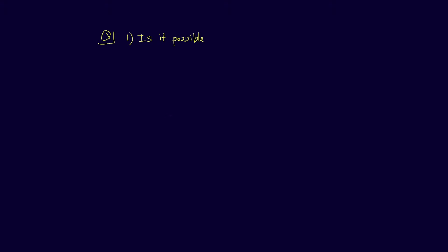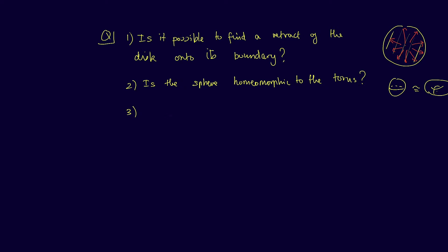Here are three topological questions to consider. Number one: Is it possible to retract a disc onto its boundary? Is the sphere homeomorphic to the torus? Number three: Since the n-sphere is a universal double cover of RP^n for n strictly bigger than one, then we know that the fundamental group of RP^n is Z mod 2 for all n strictly bigger than one.